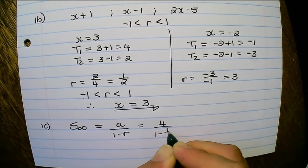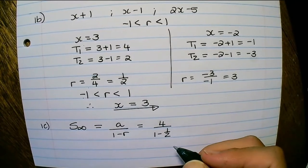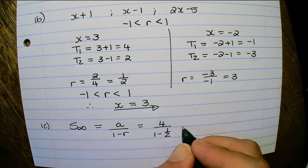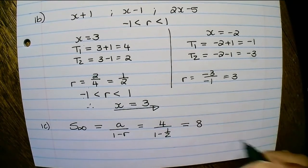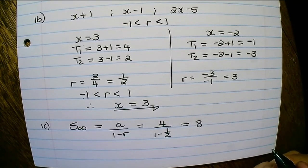And we already know the ratio which is a half. Therefore the sum to infinity is equal to 8 when x is equal to 3.